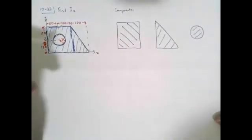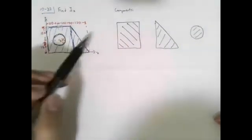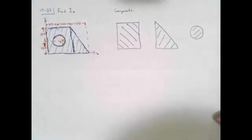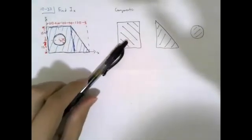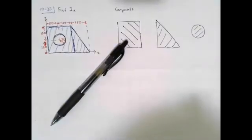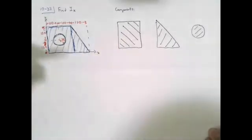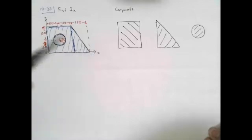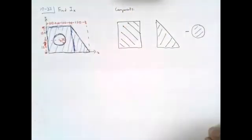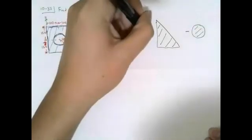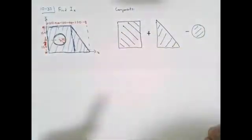There are a couple of things we need to note. The shape is formed by the rectangle and the triangle, but the circle is actually not part of the shape — it is the portion that we're removing. So if we want to solve this problem, we know that the moment of inertia for composite areas is equal to the sum of the moments of inertia of their individual segments. However, because the circle is not part of this shape, we actually have to subtract its moment of inertia.